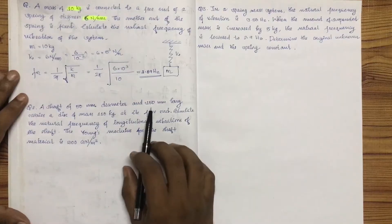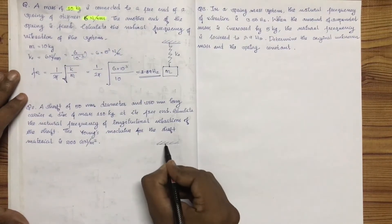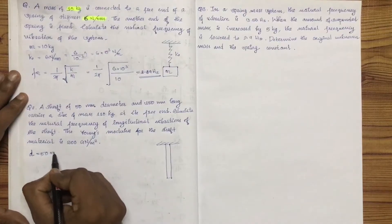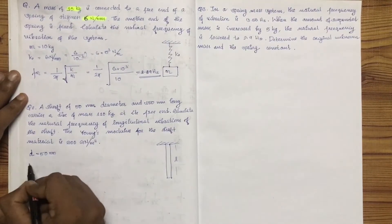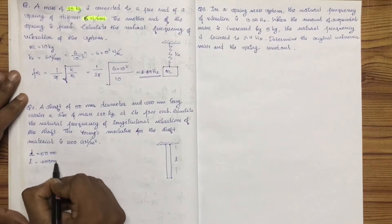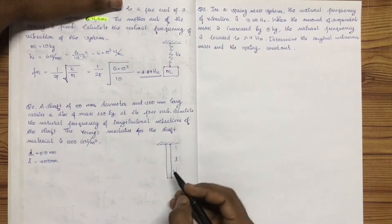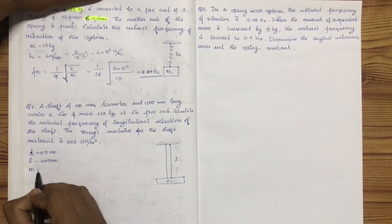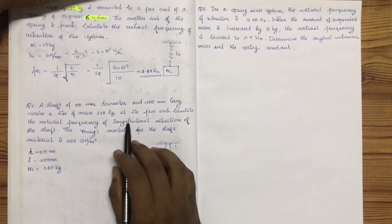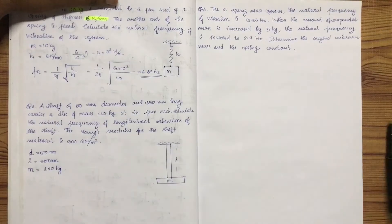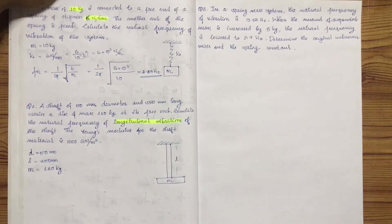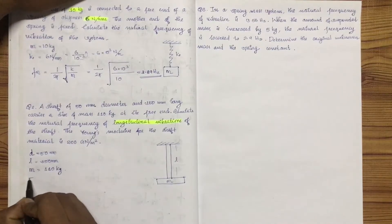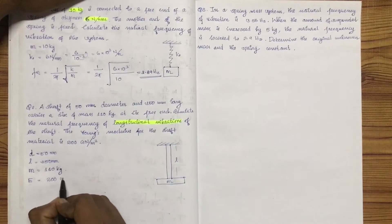This is a shaft of 50 mm diameter and 350 mm long. The diameter d = 50 mm, length L = 350 mm. It carries a disk of mass m = 110 kg at its free end. Calculate the natural frequency of longitudinal vibration. The shaft modulus E = 200 GN/m².